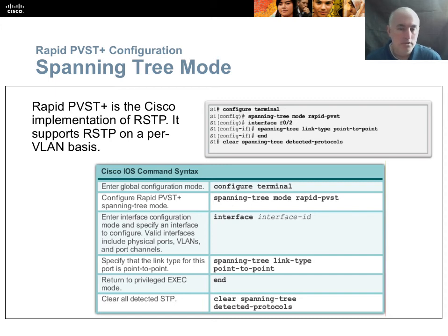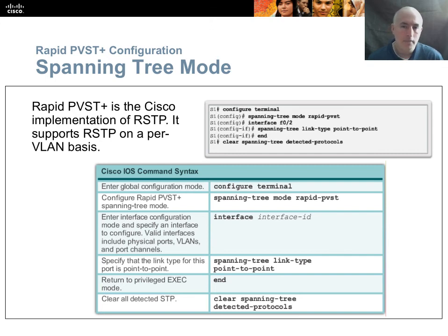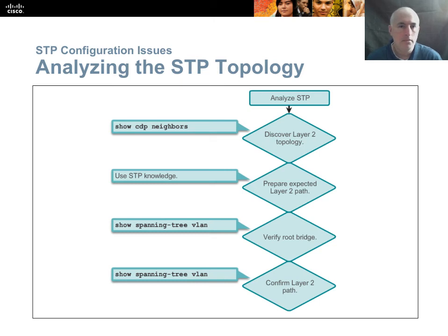Spanning tree mode: there are times when you need to change it. PVST Plus is Cisco's implementation; you might want industry standard RSTP or original STP, changeable with the 'spanning-tree mode' command. Use a question mark after 'mode' to see what versions your switch supports. It's important to analyze the STP topology using show commands to determine which switch is the root bridge, which is the backup root bridge, and which ports are root ports or designated ports.